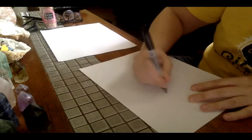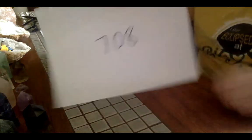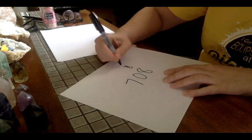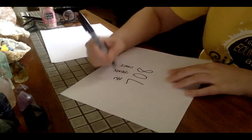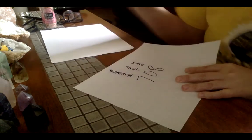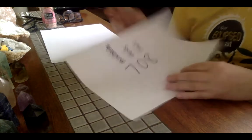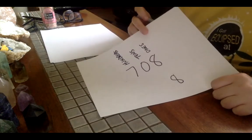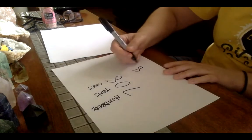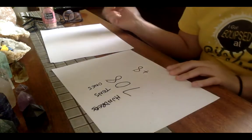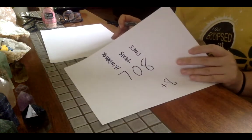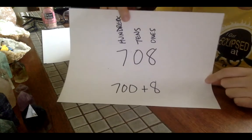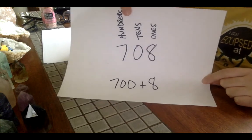Sometimes you'll see a number and it'll ask you to write it out in expanded form. Well, if you remember your places, ones, tens, hundreds, and you know the value of each of these, you can write it out in expanded form. This 8 is 8 ones, and that's just 8. We have zero tens. Well, zero is always zero. So the value is zero. I don't really have to write anything for that. And I have 7 hundreds. Well, how much is 700? It's 700.